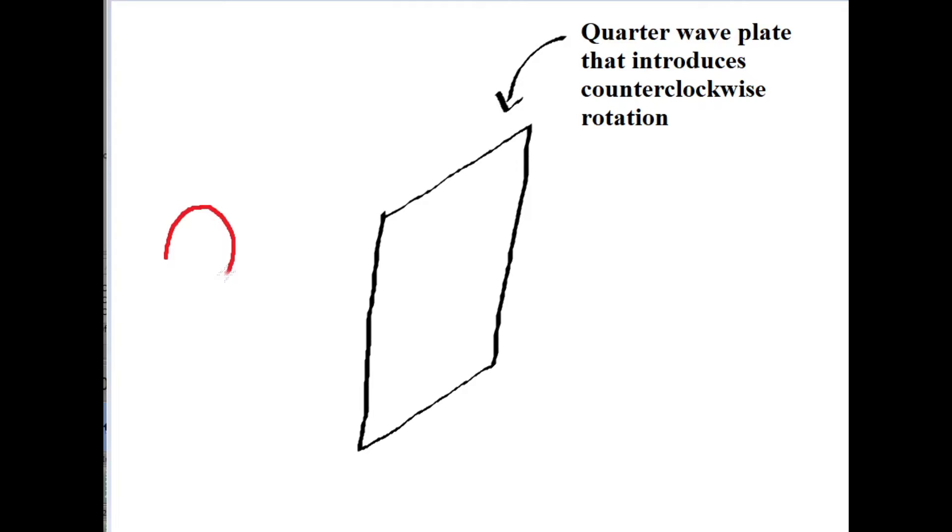If circularly polarized light comes into contact with a quarter wave plate that introduces a rotation opposite to the current rotation of the polarized light, the light won't pass through the quarter wave plate.